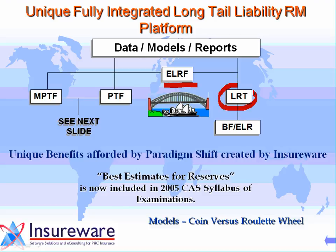It turns out that a link ratio is one number divided by another number, and as a result of that, a link ratio is just a slope of a line. It's a trend, and an average link ratio is an average trend.